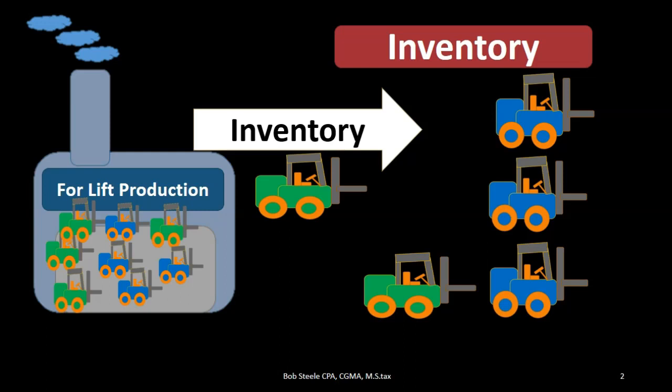Forklifts are inventory because we are purchasing them in order to resell them for the generation of revenue. That's the definition of inventory — purchasing something for resale — as opposed to purchasing the forklift in order to help generate revenue through its use, in which case it would be property, plant and equipment. So it's the intended use of the forklift which determines whether it's inventory or property, plant and equipment.